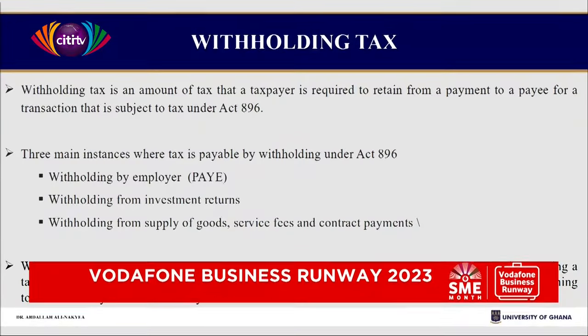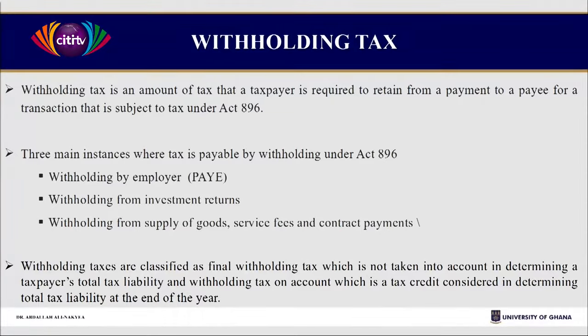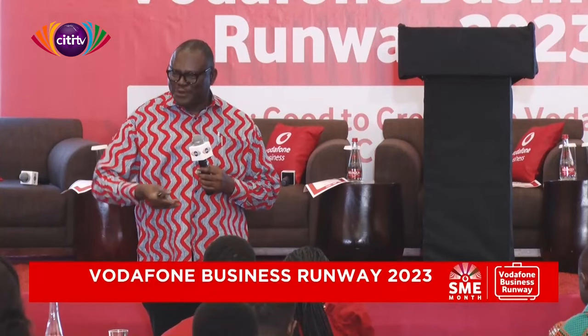We have withholding taxes. When they do a tax audit, this is where a lot of you get exposures. The tax law mandatorily makes you an agent of the Commissioner General to withhold tax and bring it to him. Interestingly, you don't get paid for this assignment, but you are penalized for not complying. So what we should advocate for is to get an interest for collecting withholding taxes for government.